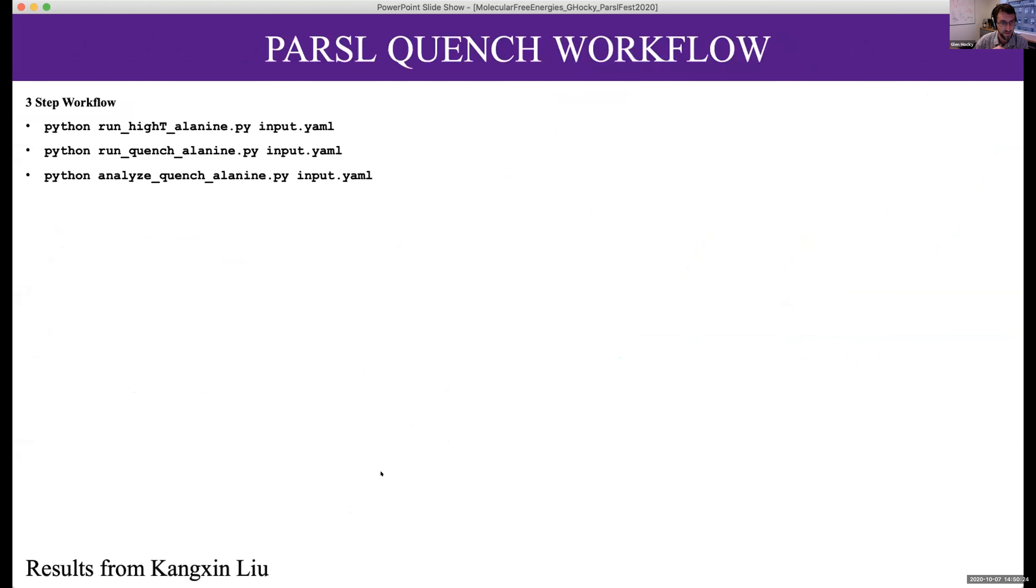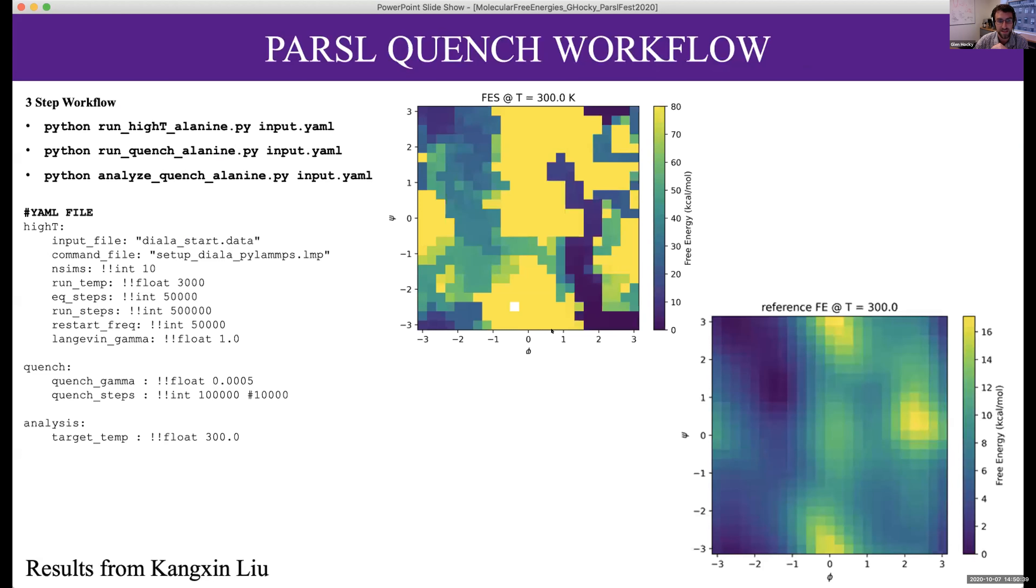We do that a bunch of times and calculate this formula. We set up those three steps as different Python scripts that all read from one input file with the different parameters that define our workflow. When you run these three steps, the output is a map like this compared to this reference. We get kind of the correct answer for the low energy regions but not necessarily everywhere, partly because we need the high energy part to cover everything evenly. Now we're combining these two approaches, the umbrella sampling and this thing where we run at high temperature and quench.